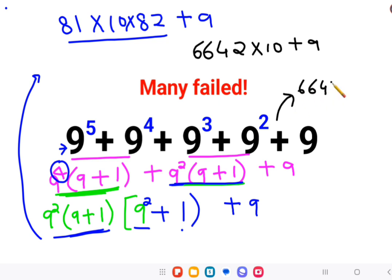So final answer comes out to be 6642 into 10 becomes 66420 plus 9, so here I can say my final answer is 66429. I hope you saw how easily we could do something like this. That's it for today, I will see you in the next video.